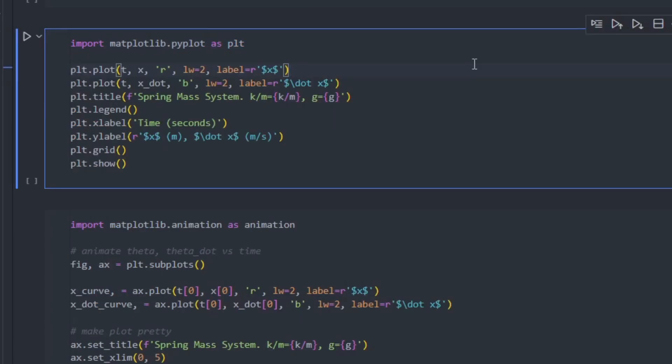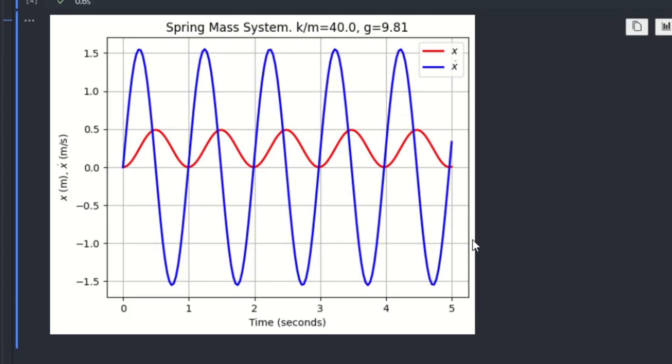Now let's generate some plots of x and x dot to make sure that our simulation gives us results that we expect. First, we'll import matplotlib. Then we'll plot x and x dot as functions of time. We'll set the line width, the color, and also give a label for a legend. We'll add a title, a legend, x label, y label, and a grid. Running that, we get this nice plot of x and x dot. We see that x is red, and x dot is blue, and we get this nice sinusoidal pattern which we expect.